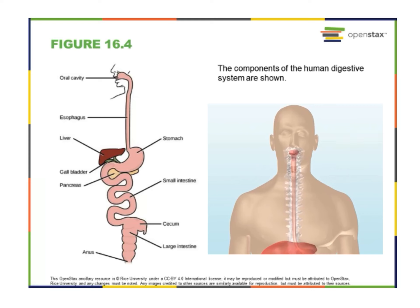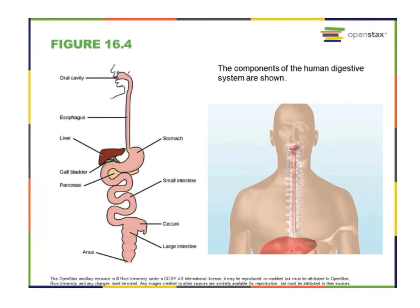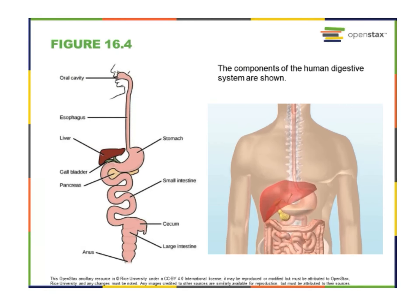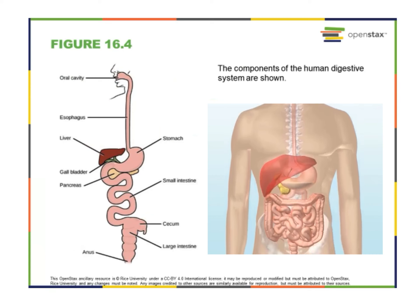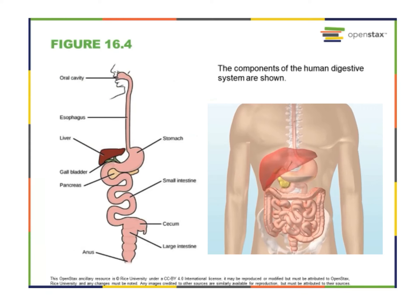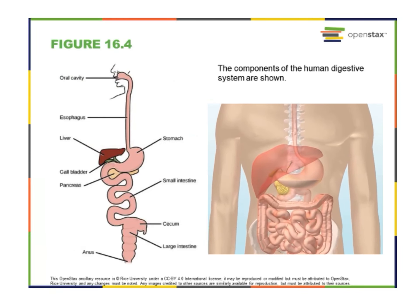Much of that sweetness comes from an enzyme called amylase, which begins a process of converting starches into a disaccharide called maltose — and that maltose is what tastes sweet. Another enzyme called lipase is produced by cells in the tongue to break down fats. Remember, these are things we looked at in our enzyme lab.